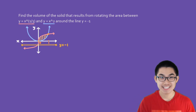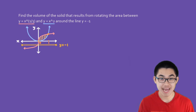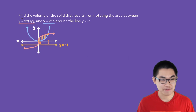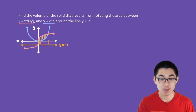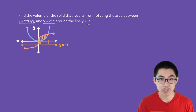Hi friends, welcome back. In this video, I want to talk about solids of revolution revolving around horizontal lines below the x-axis. Find the volume of the solid that results from rotating the area between y equals x to the power of one third — that's the pink function — and y equals x squared, the blue function, around the line y equals negative one, which is the yellow line.